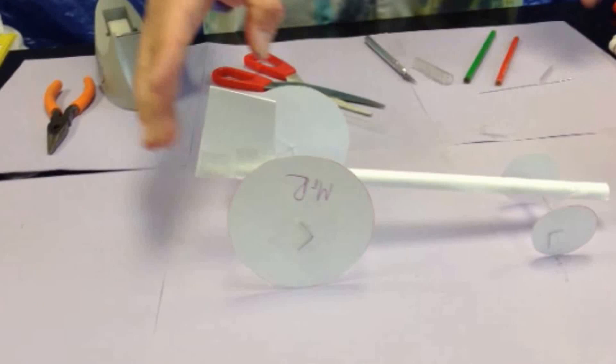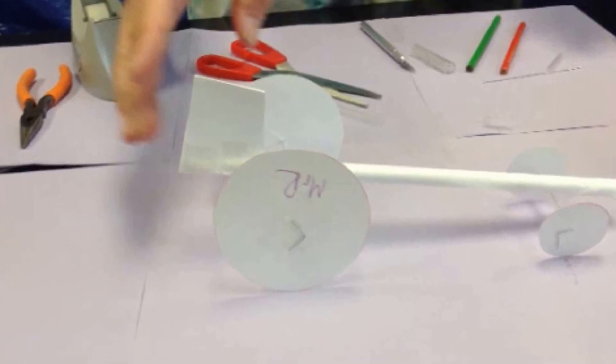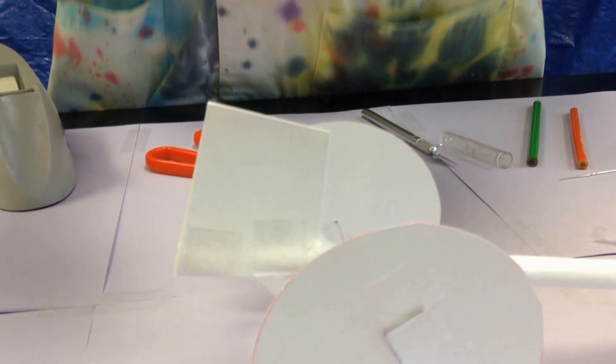Hello again everybody, welcome back. Today we're going to make a propeller. Now your car at this point should look like what you see on the screen. It should have wheels attached and the motor mount attached.